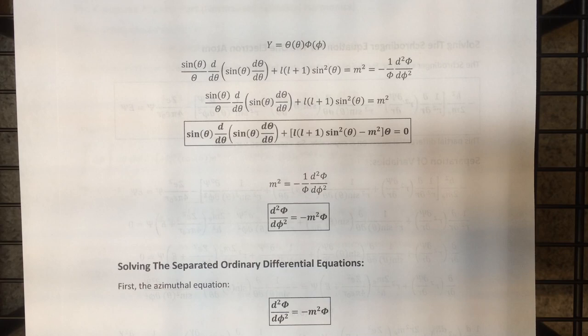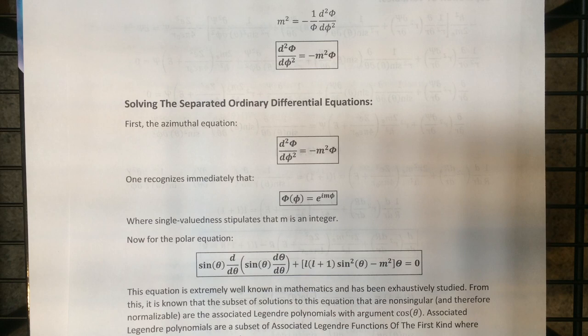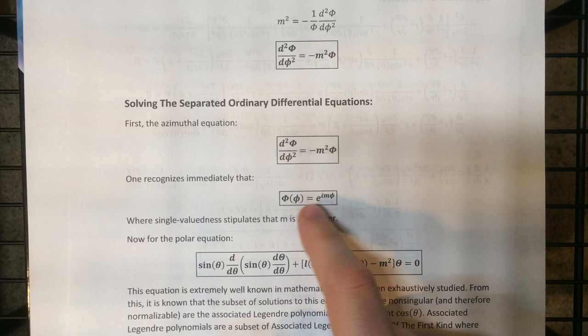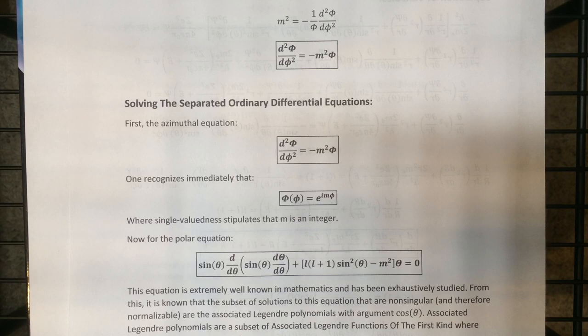So now I needed to solve the three separated ordinary differential equations. The first one is easy — it's solved by complex phase exponentials. Because phi is an angular variable and we need single-valuedness, we need the phase to have the same value for phi equals zero and phi equals two pi. Since this phase is periodic due to its relation to trig functions, the way to make single-valuedness happen is to pick m to be an integer.